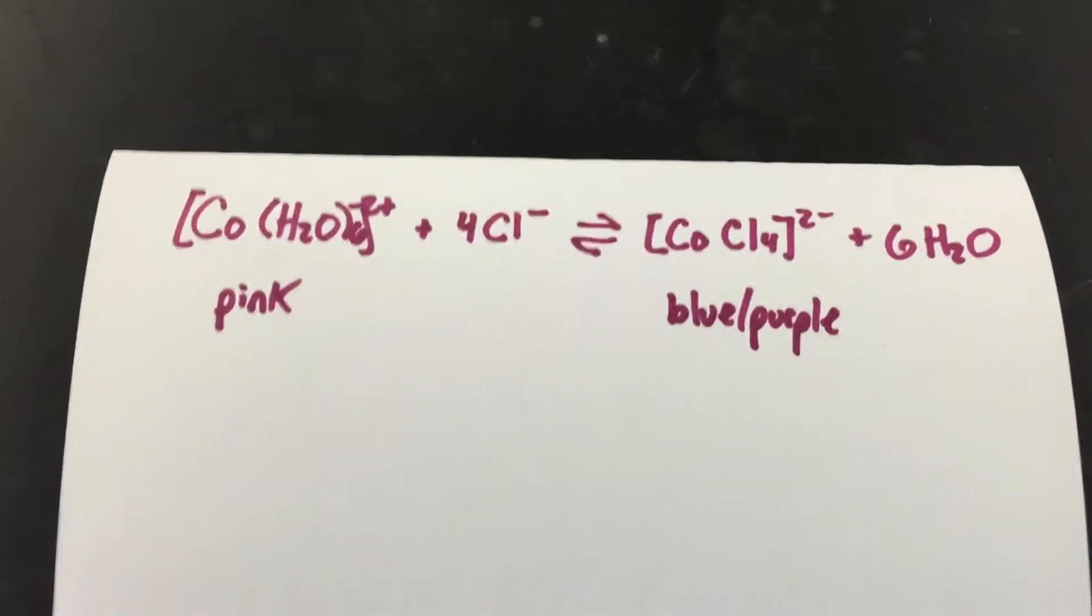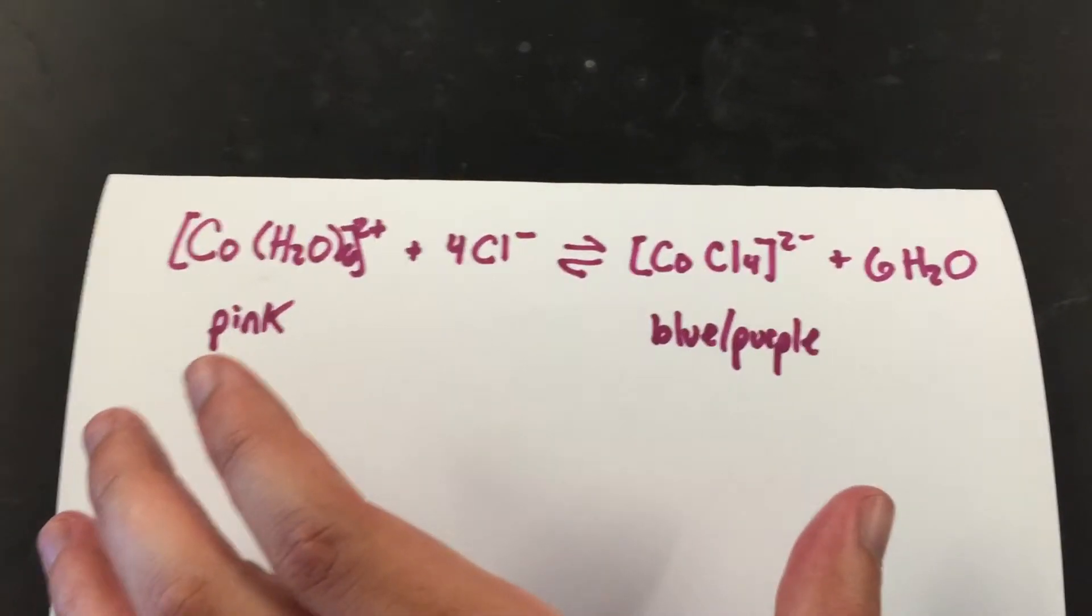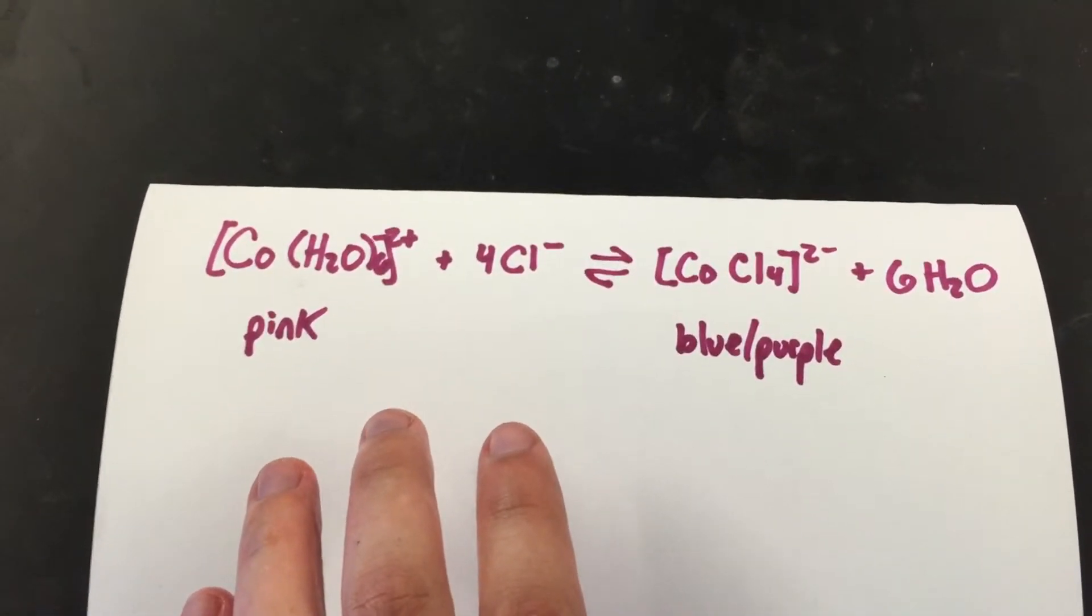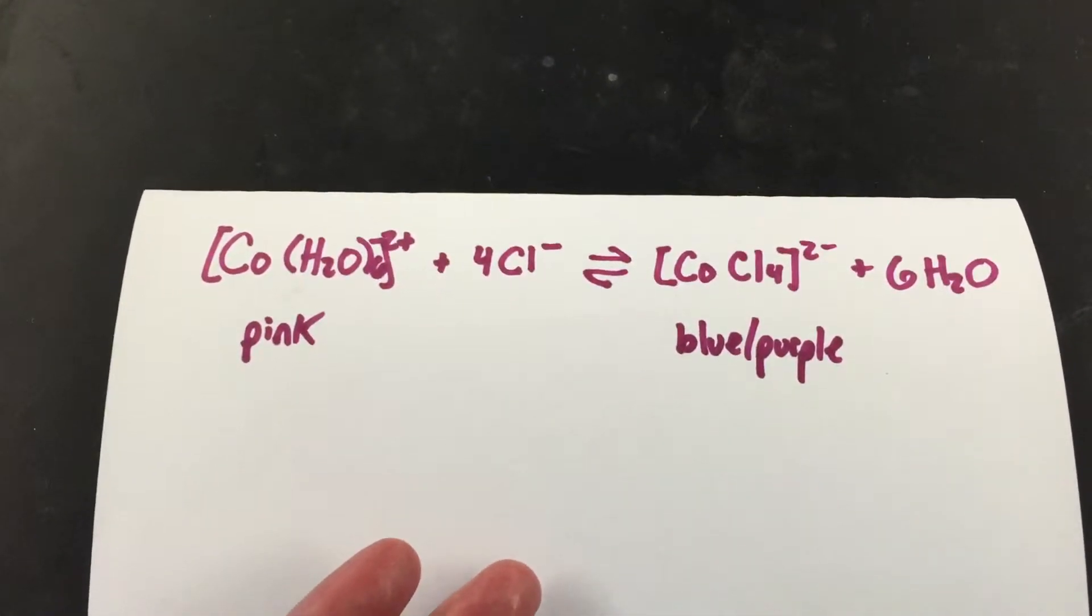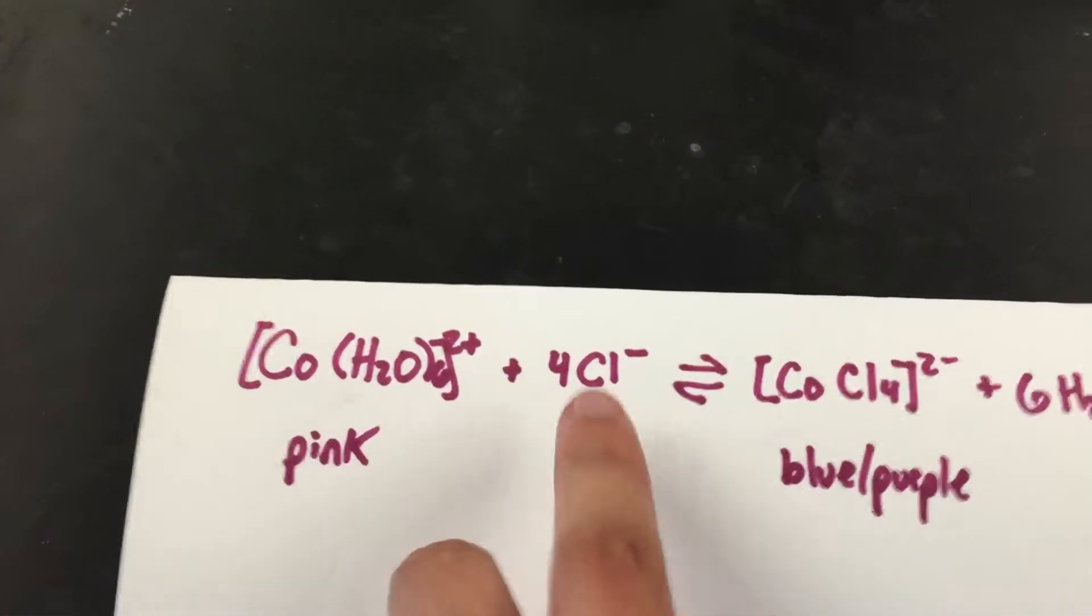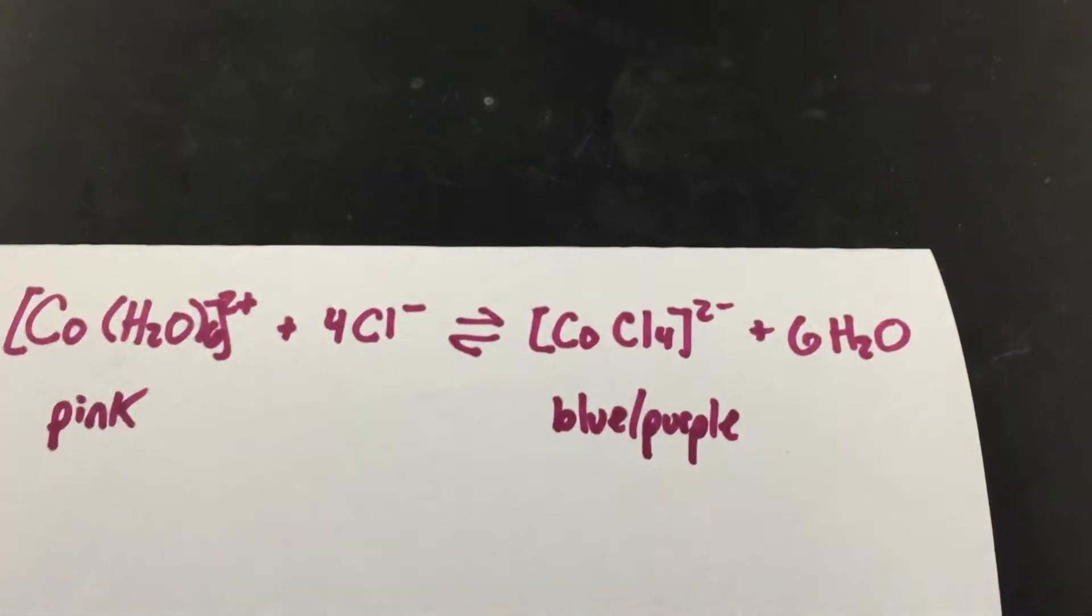What I have here is an equilibrium between both of these complexes. I can adjust or change this equilibrium if I add more of a reactant or if I add more of a product.